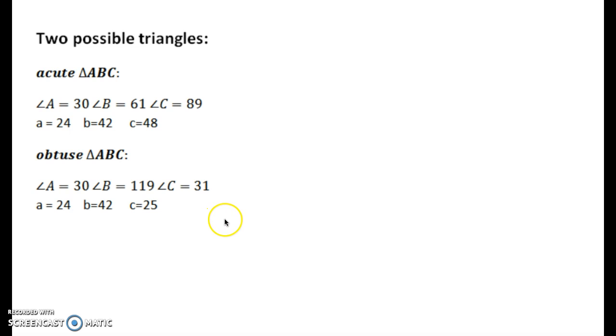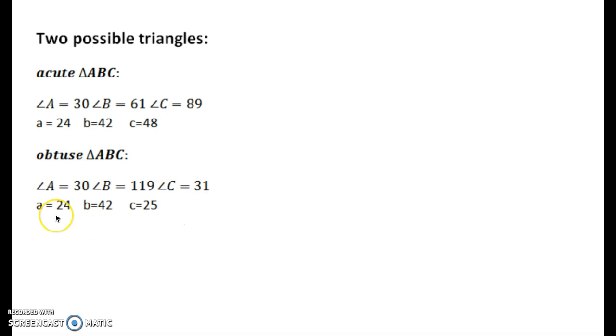So the summary of our two possible triangles: the acute triangle has angle A equal to 30, angle B equal to 61, angle C equal to 89, with side lengths A equal to 24, B equal to 42, and C approximately equal to 48. The obtuse triangle has A still at 30 degrees, B obtuse at 119 degrees, and C equal to 31 degrees, with side lengths A and B the same at 24 and 42, and the new side length C equal to approximately 25. The key thing to remember in the ambiguous case is to determine the height first, so you can determine whether there are zero, one, or two possible triangles created.